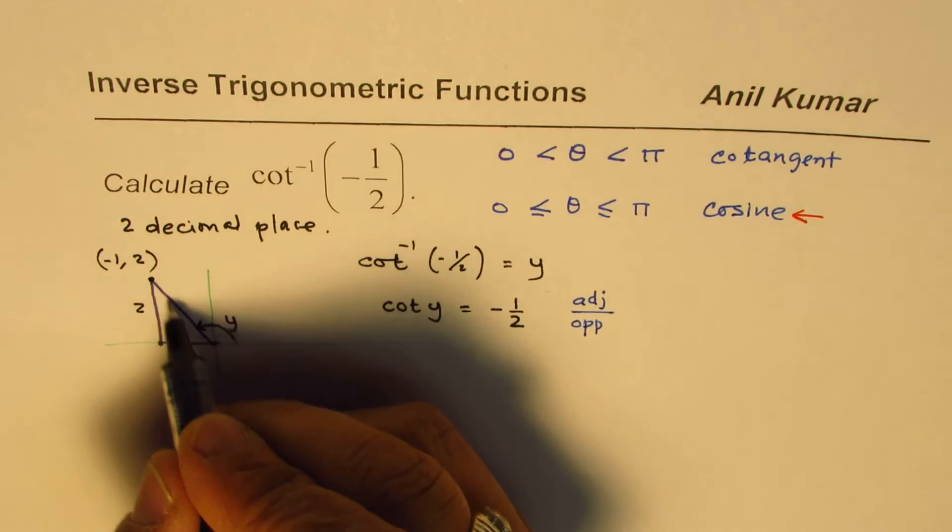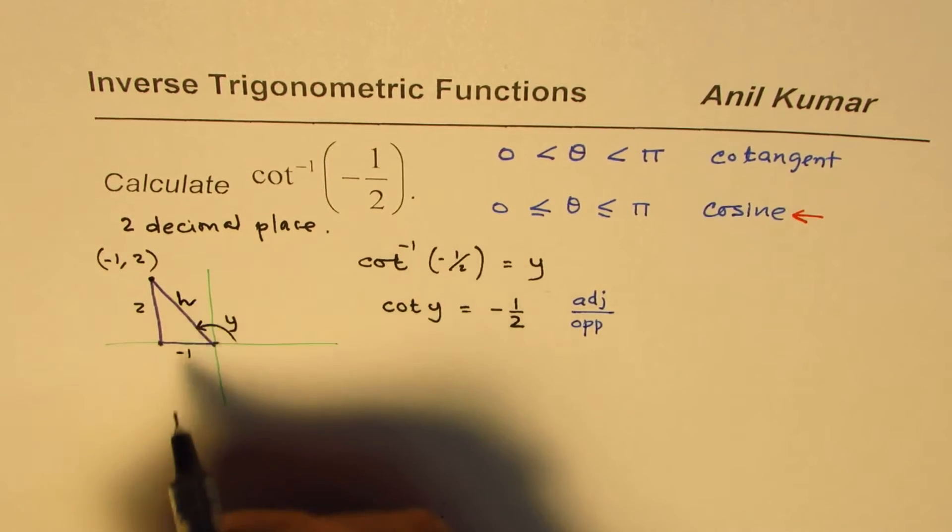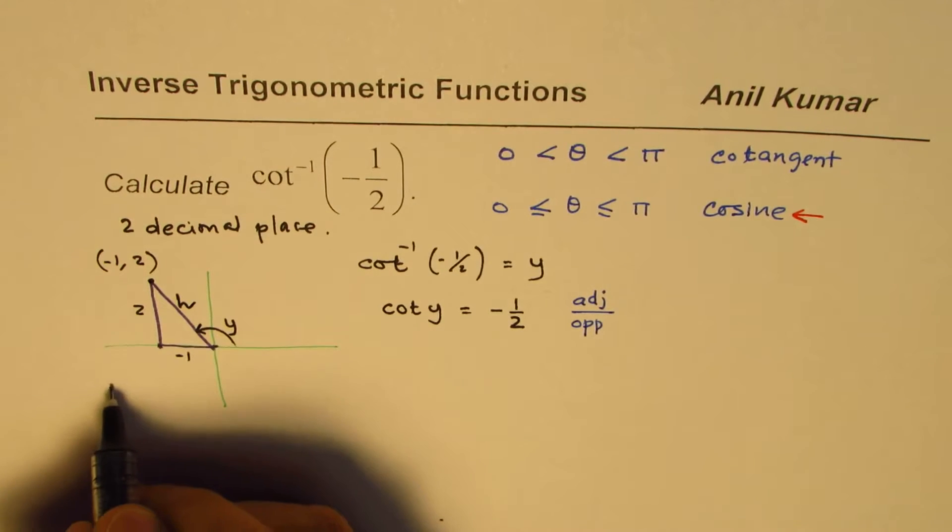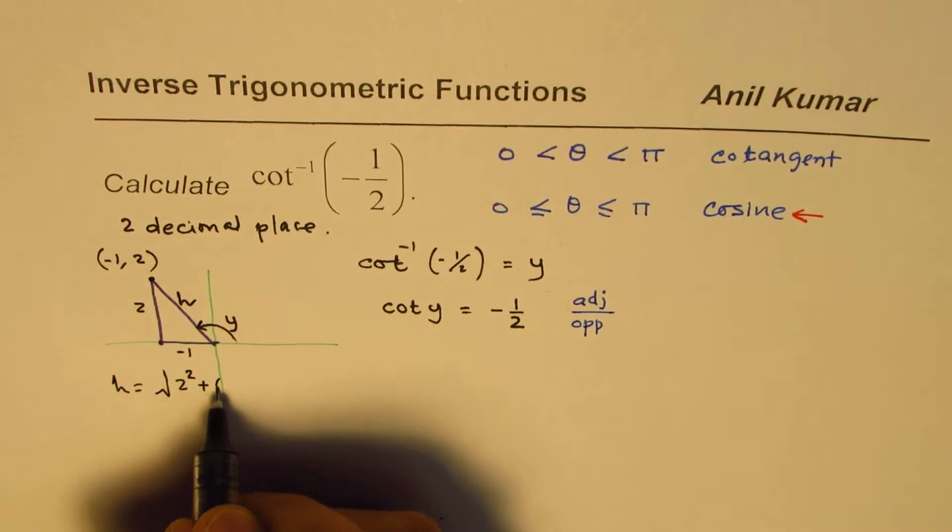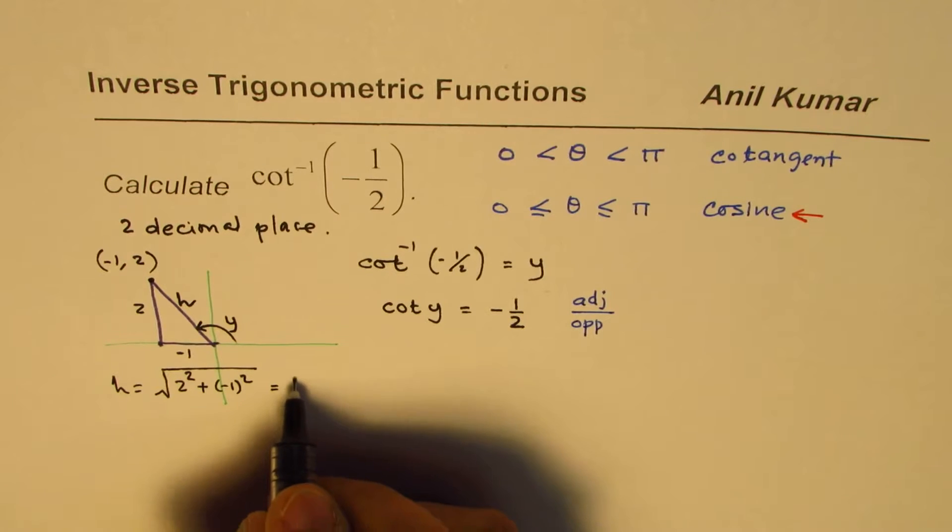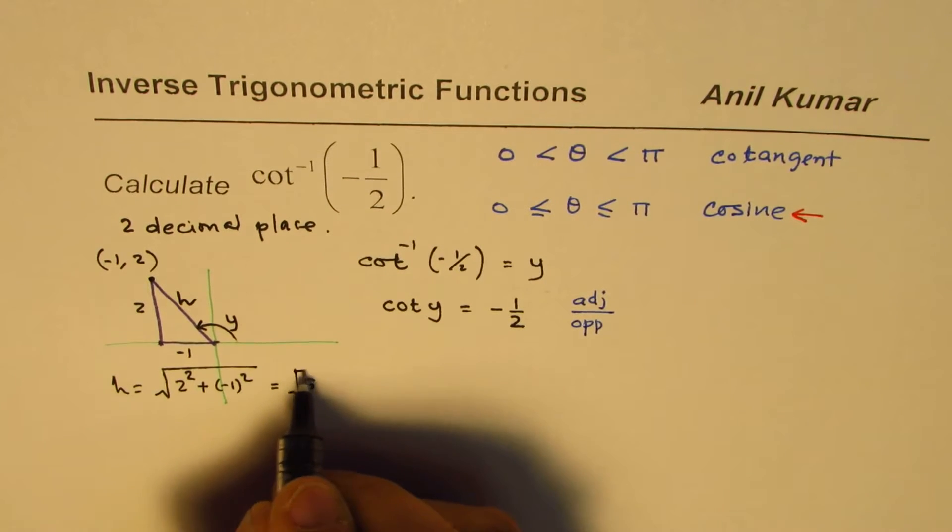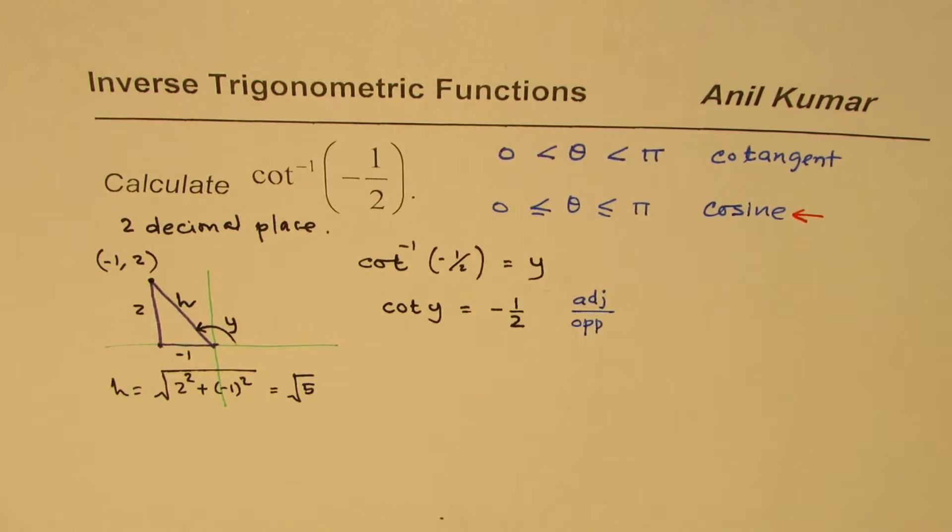In that case, let us say this hypotenuse, h, is equals to how much? h will be equals to square root of 2 squared plus minus 1 squared, which is square root of 5. So, that is h.